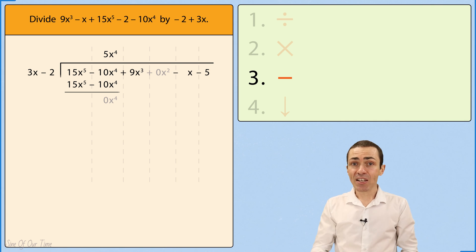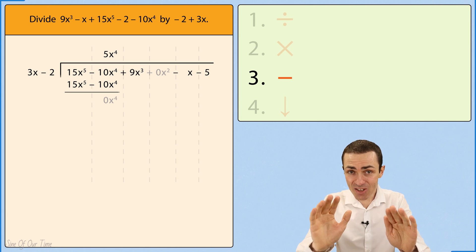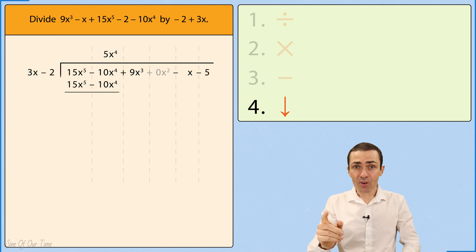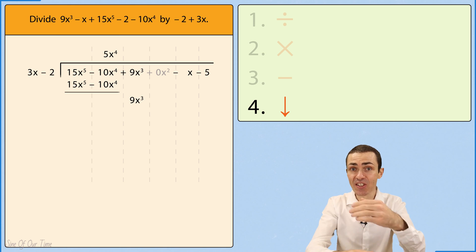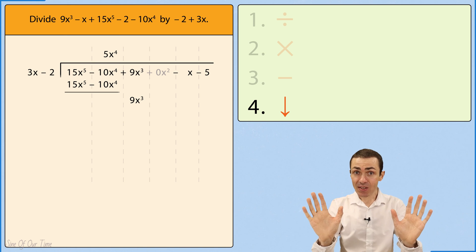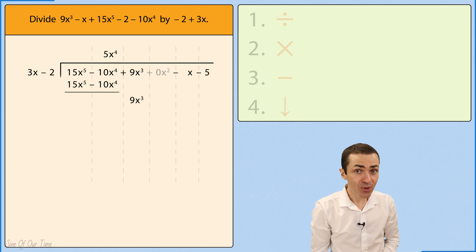If it makes you feel better writing 0x to the power of 4, you can, but it's not essential. What we can do though is take the 9x cubed and bring it down. We have now cycled through these steps once, but you guessed it, we are not done yet. So let's cycle through them again.